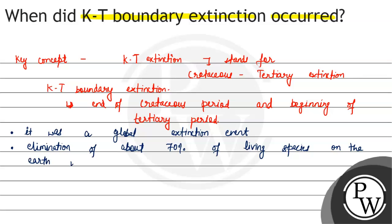And that happened within a short period of time. So, KT extinction means 70% of living species were eliminated. And when did it happen? It occurred almost 65 million years ago.